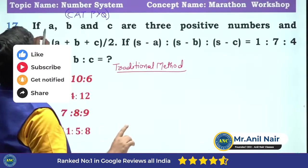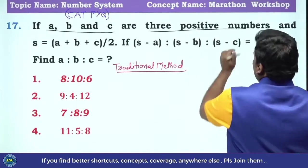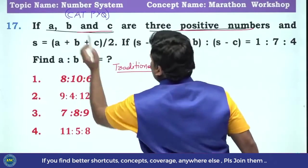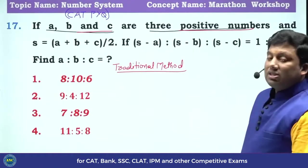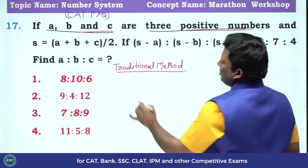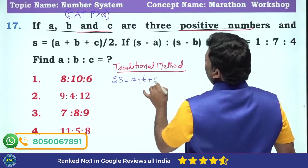A, B and C are three natural numbers. First key point is clear to me. What is the next statement given? S equivalent to (A + B + C)/2. That means 2S is equivalent to A + B + C.